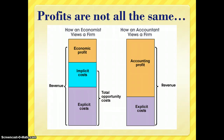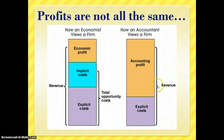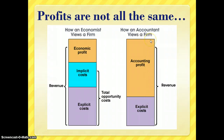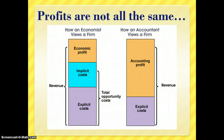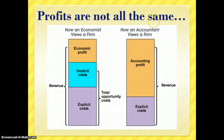Profits are not all the same. An accountant looks at profit by asking how much revenue came in and what were the explicit costs — the difference is accounting profit. Do you have more money at the end of the year than at the beginning? If so, you have an accounting profit. But economists say we need the full story: could you have done better using your resources differently? That leads to what's known as economic profit.